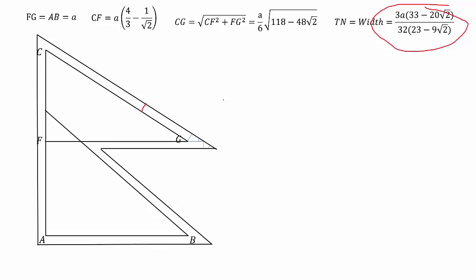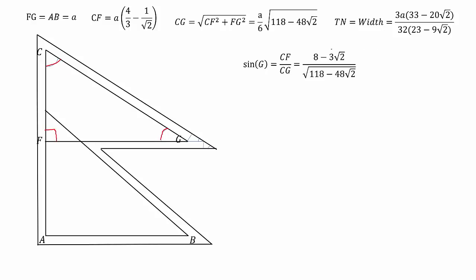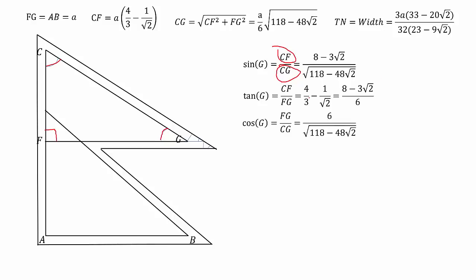The width of the border TN is given by the value we already calculated in the previous video. Let's define angle Z and angle C in this right angle triangle. We can find sin G as the perpendicular CF divided by the hypotenuse CG. Similarly, tan G equals perpendicular over base. Cos Z and cot Z can be calculated from these relations as well.